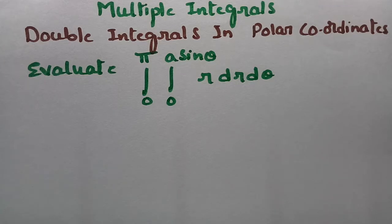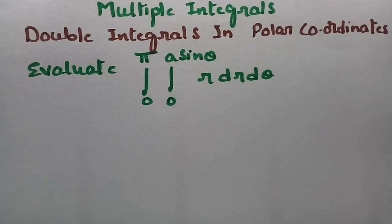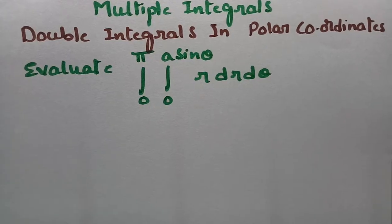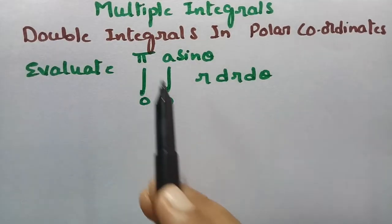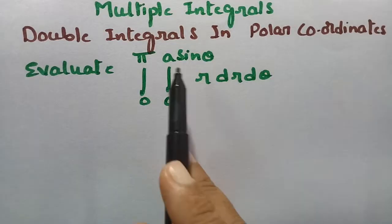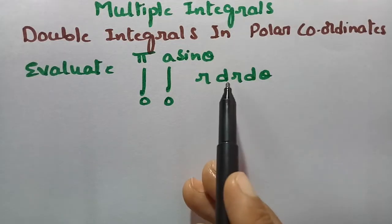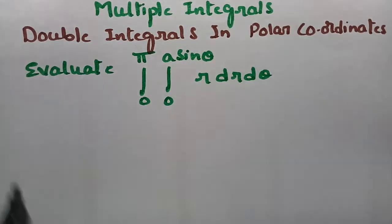I really want you to learn from this video and I can assure you that you are going to be benefited by finding an easy way to solve the problem today. Let's get started to solve the problem on the screen. Here is the double integral in polar coordinates. We have to evaluate integral 0 to pi, integral 0 to a sin theta, r dr d theta.